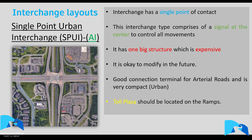The Single Point Urban Interchange, or SPUI, has a single point of contact at the center with just one signal controlling all maneuvers. It has one large structure which is very expensive — roughly 15 to 18 million dollars. It's easy to modify to a diamond later and is very compact and good for urban areas. However, in developing countries with power reliability issues, if power goes off there is a lot of confusion at this interchange.